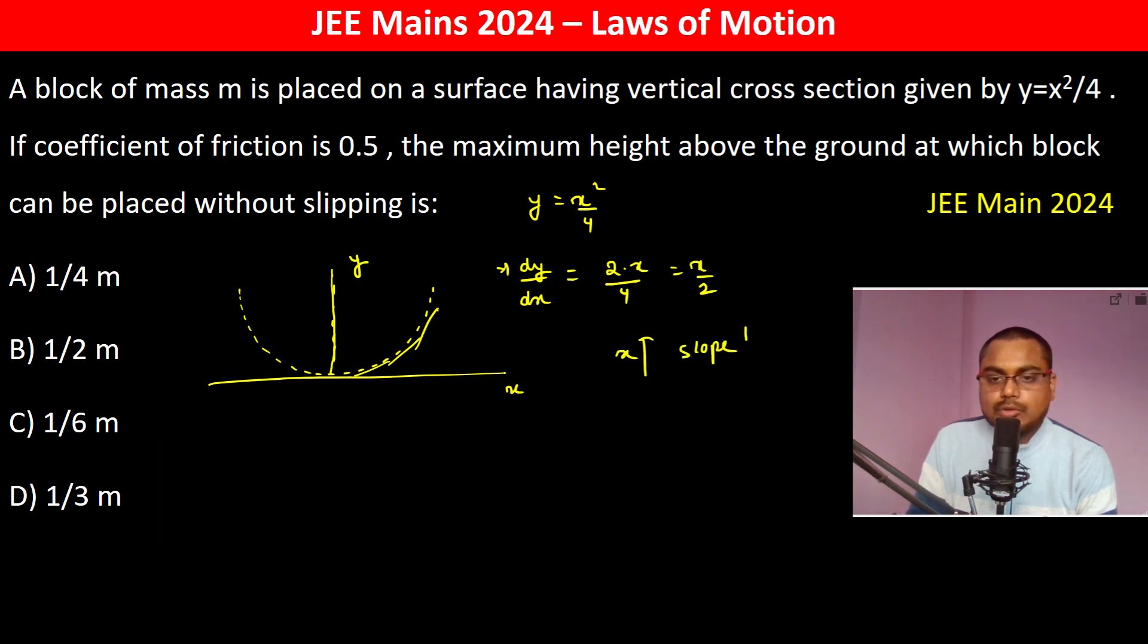So something like the slope is like a theta. It has to be like a slipping condition.